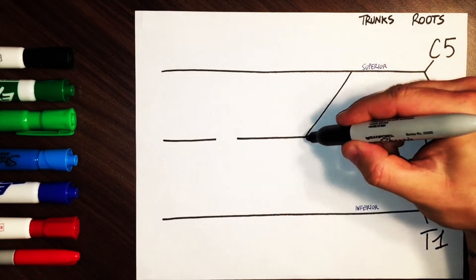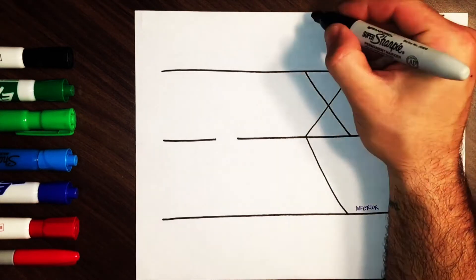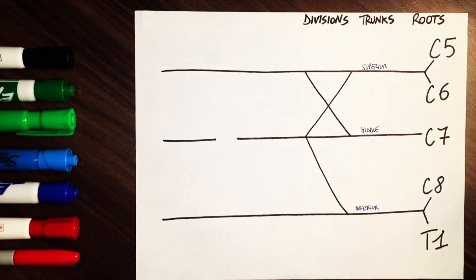Where the trunks come together, we call those segments divisions. Draw an arrow between the superior and inferior cord with the apex on the middle one, and complete the X shape between the superior and middle cord.